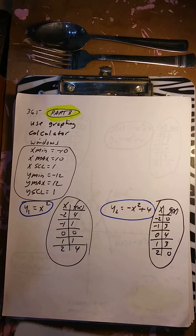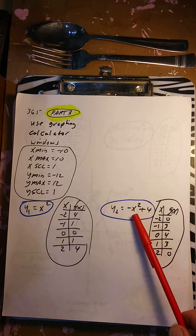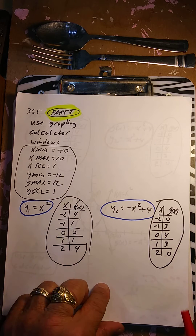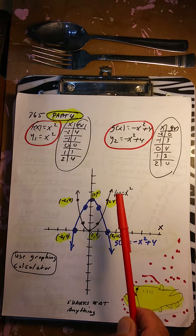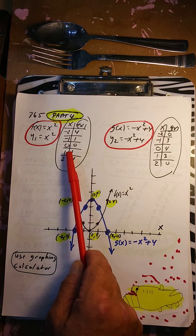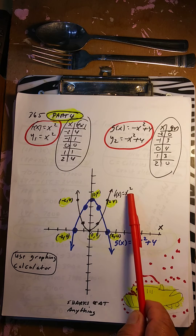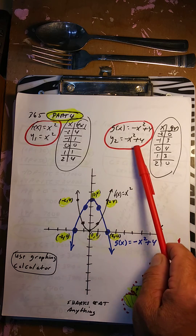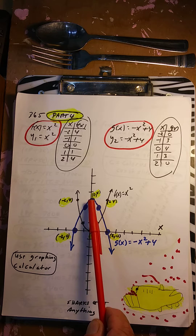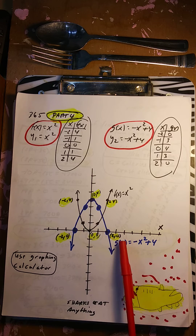Now we're going to go ahead and graph it. You can set up your graphing calculator to draw both graphs. For f(x) = x²: the points are (-2, 4), (-1, 1), (0, 0), (1, 1), and (2, 4). For g(x) = -x² + 4: the numbers are (-2, 0), (-1, 3), (0, 4), (1, 3), and (2, 0). There's the graph of g(x).